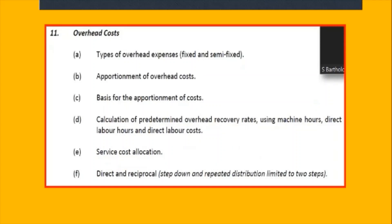Moving to overhead costs — we have the types of overhead cost expenses: variable, semi-variable, and fixed. Variable expenses are usually direct costs rather than overhead costs. CSEC has a different way of treating variable indirect costs, as we saw in some past paper questions. Nevertheless, whatever they call them, you can still treat them as we've learned. The apportionment of overhead costs and the basis of apportionment are also covered here.